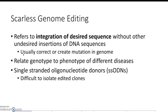This brings us to scarless genome editing, which refers to integration of your desired sequence without other undesired DNA insertions. These methods can be used to either correct or create mutations in the genome. However, inserting only the desired sequence is easier said than done — it is very difficult to isolate edited clones and distinguish them from non-edited ones. Some researchers, like those in this paper, use single-stranded oligonucleotide donors, or SSODNs, which help reduce the chance of undesired insertions, since plasmids and double-stranded DNA are more likely to be randomly integrated into the genome.